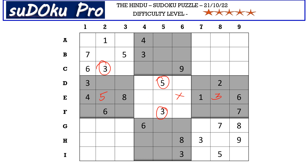Now in E row, these three empty cells take two, seven, and nine — so we have a two-seven-nine triplet here. Assuming two, seven, nine in these three cells, we have four and six blocking these three cells, meaning four and six can go in D6 and F6. We have six blocking from F row, so F6 takes four and D6 takes six.